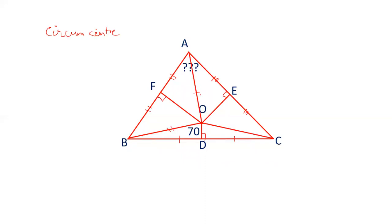So, this side OA, OB, and OC are equal. And therefore, we can draw a circle from this point.